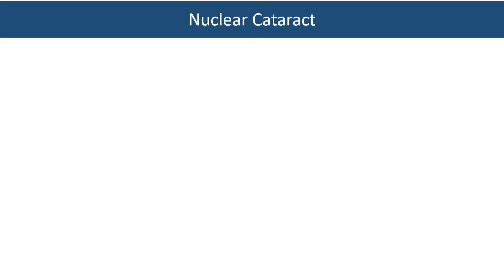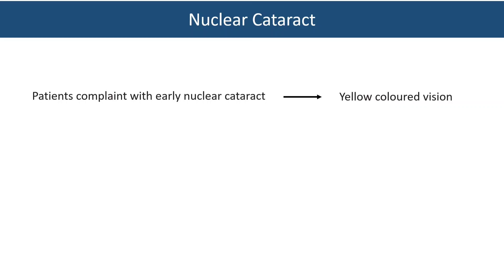One more important point: since the lens becomes yellow in nuclear cataract, everything the patient sees will appear slightly yellowish. Patients with early nuclear cataract will therefore complain of yellow-colored vision, which is known as xanthopsia. That covers our first type of senile cataract — nuclear cataract. We will move on to the next type, cortical cataract, in the next upcoming video.